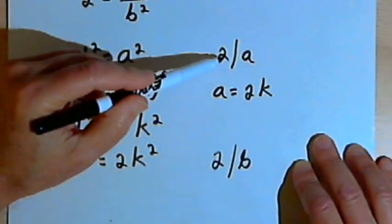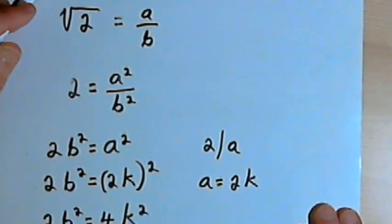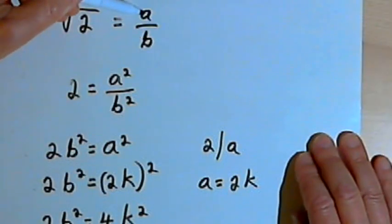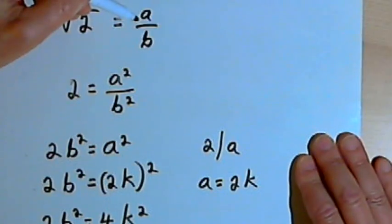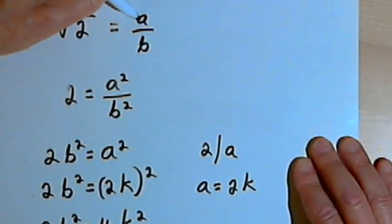Well, if 2 is a divisor of both a and b, then my first assumption that a over b is a fraction reduced to lowest terms, that assumption is wrong. Because what we're saying is that I could divide a 2 into both a and b, so they have a common factor.